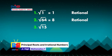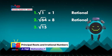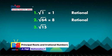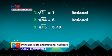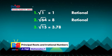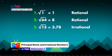Number 3: square root of 15. Can you think of any number that when multiplied by itself will give an answer of 15? None. We can say then that 15 is not a perfect square. Therefore, the principal root of square root of 15 is irrational.